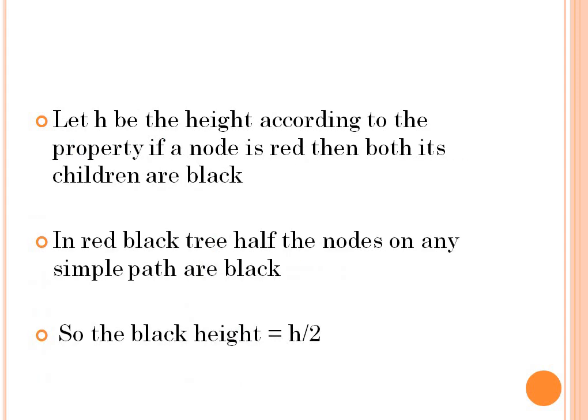Let h be the height. According to the red-black tree property, if a node is red then both its children are black. Half the nodes on any simple path are black, so the black height is equal to h/2. Normally half of the nodes in a red-black tree are black, so the height will be h/2.